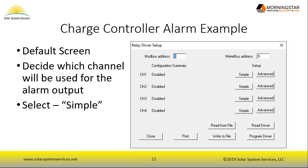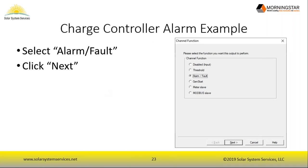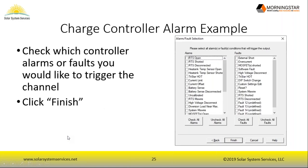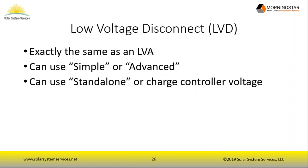To trigger alarms from a charge controller, return to the default screen, select a channel and Simple mode, then select 'Alarm or Fault' and click Next. Choose the appropriate controller from the dropdown — for example, the TriStar. A list appears with many triggerable conditions, including RTS shorted or missing, heatsink temperature, and others. Select whichever alarms you want and click Finish.